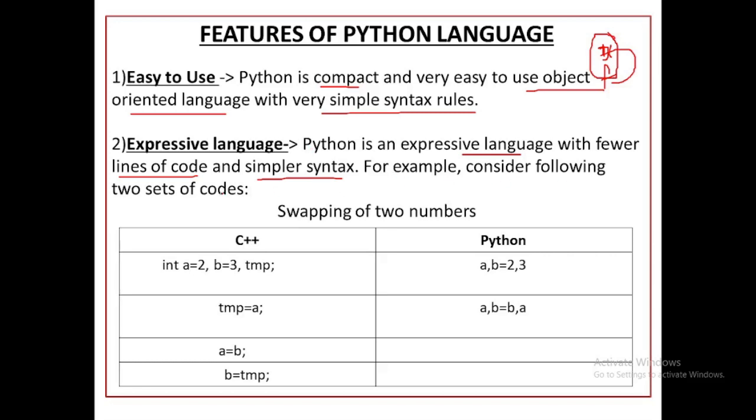Compared to those languages, Python is a very easy language. For example, consider the following two sets of code — one in C++ and one in Python.